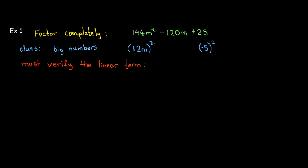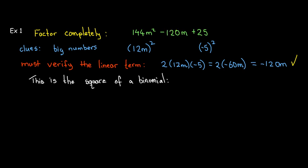Now, we can't just automatically conclude that this is the square of a binomial. We have to check that linear term. Remember, it should be twice the product of both terms, so twice the product of 12m and negative 5. So let's check that. If I take twice 12m times negative 5, I get 2 times negative 60m, which is negative 120m. And that's what I have in my original polynomial. So this is the square of a binomial, and the terms inside the binomial are 12m and negative 5, giving us (12m - 5)².